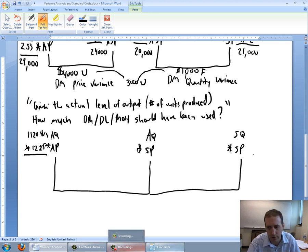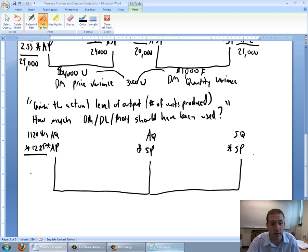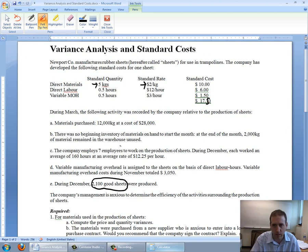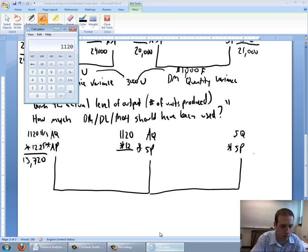AQ times AP, 1,120 times 12.25. I paid $13,720 in wages. That's what I actually paid. My AQ remains the same, 1,120. My standard price, how much am I supposed to pay my employees? I'm supposed to pay them $12 an hour according to their standard rate. So 1,120 times 12 gives me a total here of $13,440.